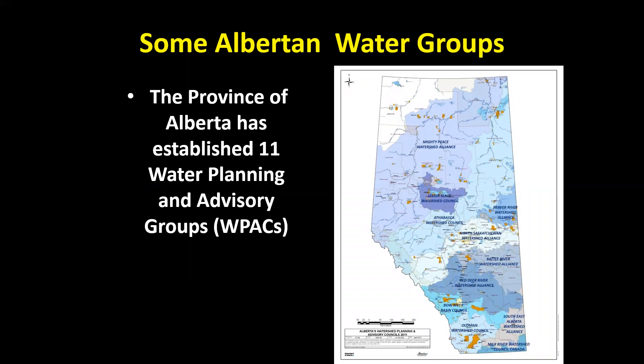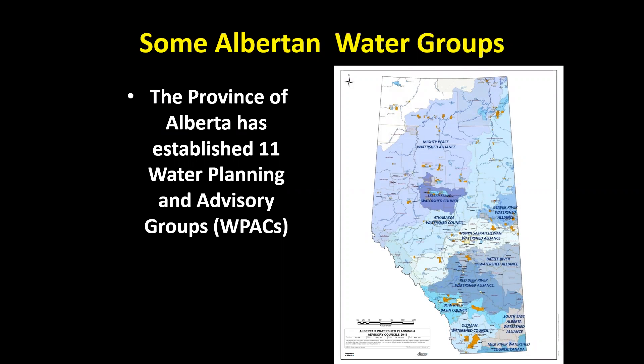In the province of Alberta, the government has a long-term plan for water and has established 11 water planning and advisory groups called W-PACs that advise the government. They cover just about the entire province, so if you live in Alberta you live in one of these regions and can support them and find out what they're doing. If you're living in other locations, there are other water groups you can join or learn about.